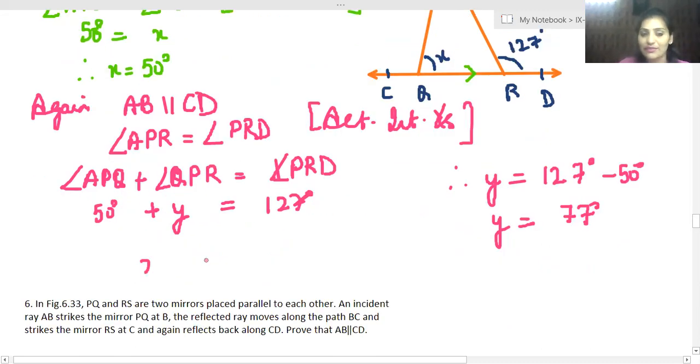have found out X is equal to 50 degrees and Y is equal to 77 degrees. So this is our answer. Yes, clear? Okay.